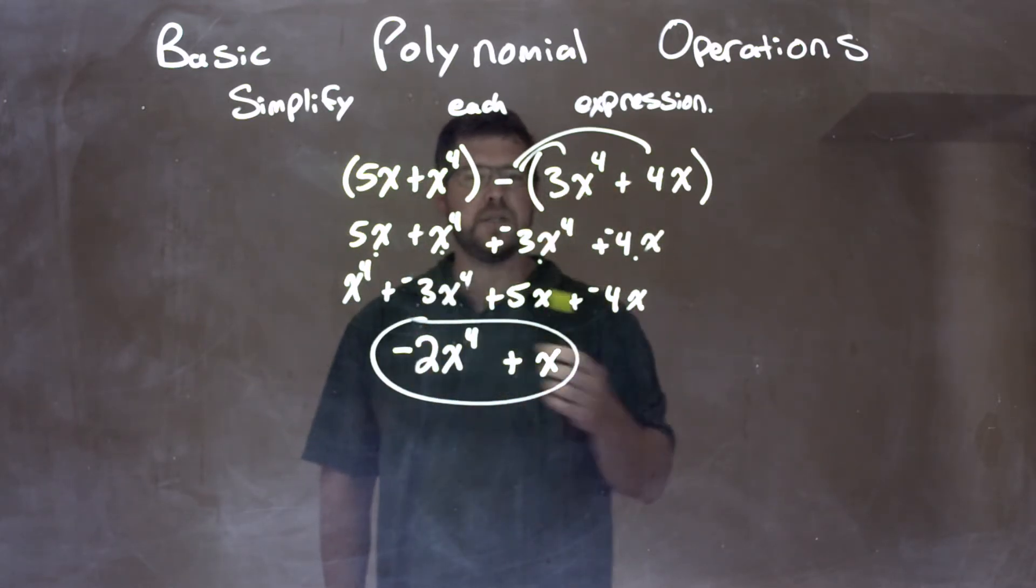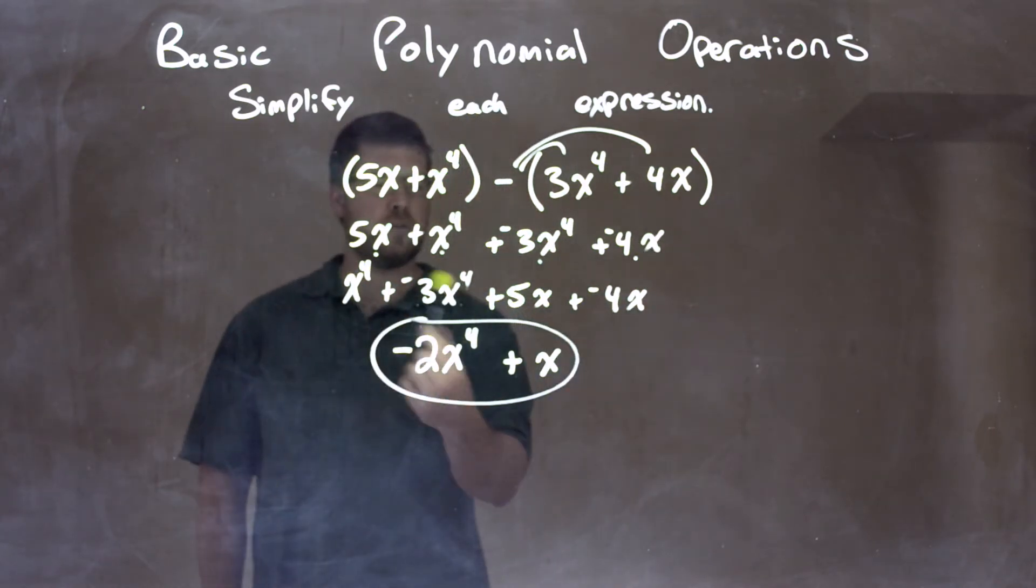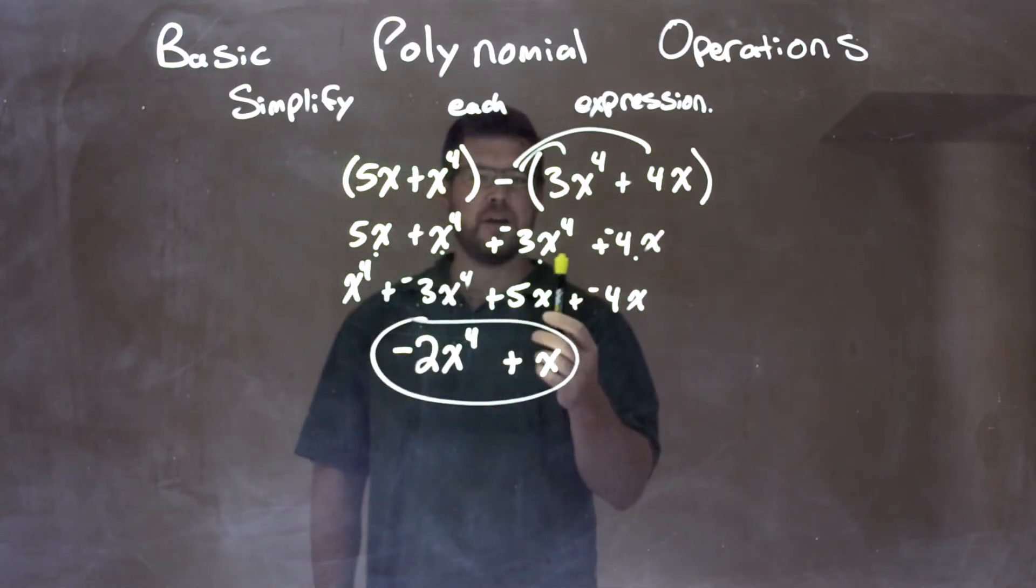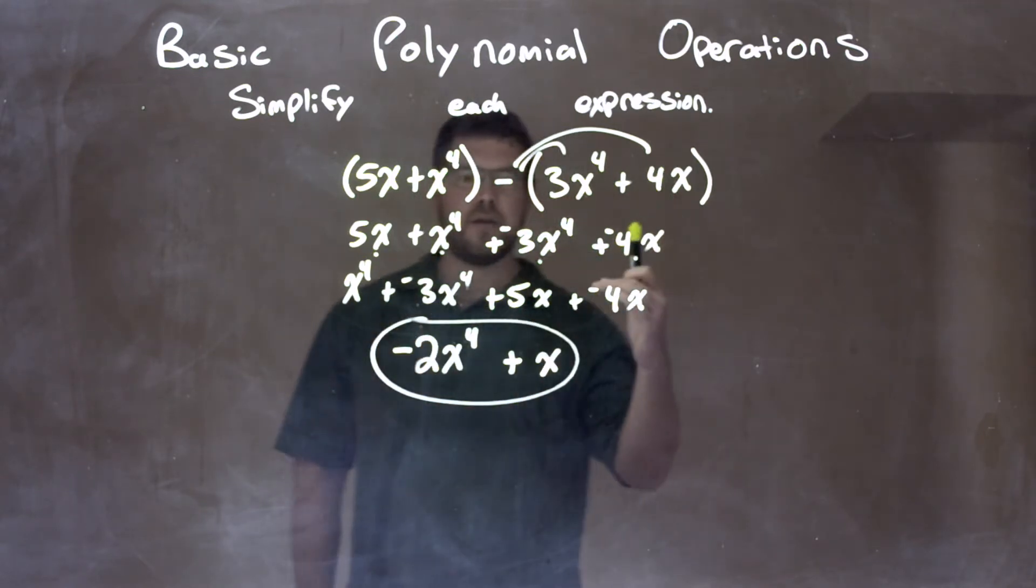I then distributed the subtraction to this one here and got rid of my parentheses. Then, I rearranged these to have all the like terms together. So the fourth powers are here, and the first powers are there. I used my little dot method to make sure I brought everything down.